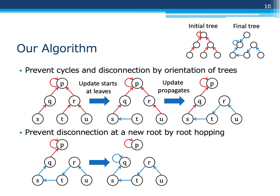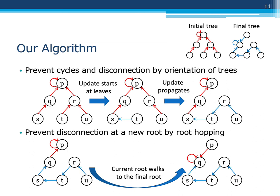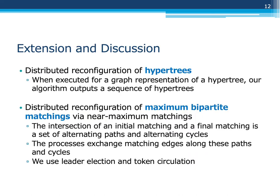The proposed algorithm enables distributed reconfiguration of spanning trees by preventing cycles and disconnection. It propagates updates from the leaves to the ascendants. However, this rule only causes disconnection at a new root. Such a disconnection is avoided by making the current root walk to the final root. We can show that the proposed algorithm generates a reconfiguration sequence of hypertrees when applied to a graph representation of a hypertree. We can also obtain a distributed reconfiguration algorithm for maximum bipartite matchings via near-maximal matchings by basic graph properties and basic distributed algorithms.